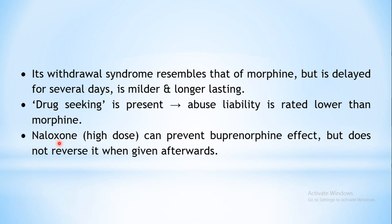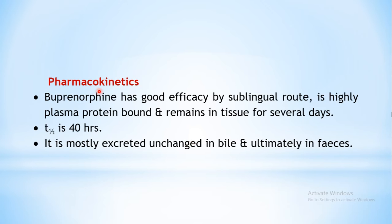Naloxone can be used to prevent the effects of buprenorphine. However, unlike its use in morphine poisoning where it can antagonize all morphine actions, naloxone cannot reverse the actions already produced by buprenorphine - it can only prevent them prophylactically if given before. Once buprenorphine is given, naloxone cannot effectively reverse the action because buprenorphine binds to the receptor more tightly and naloxone is unable to replace it.